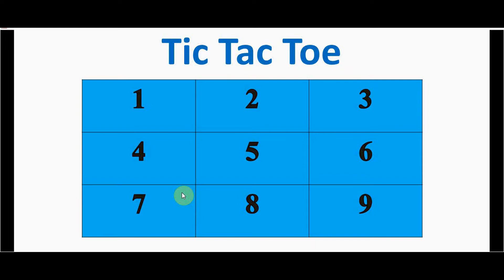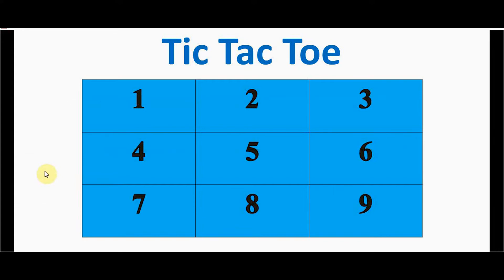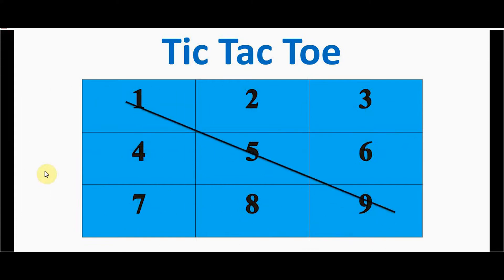Represented diagrammatically, the three by three grid has squares numbered one to nine. The player who fills either one-two-three, four-five-six, or seven-eight-nine (row-wise), or the columns, or diagonally one-five-nine or three-five-seven will be considered the winner.